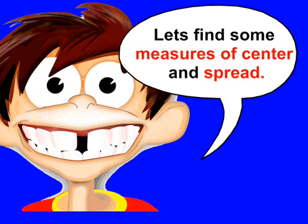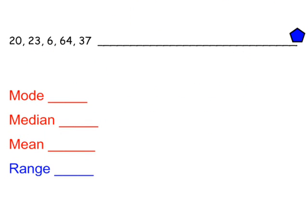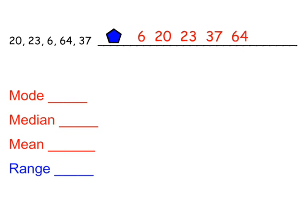Let's dive right in and find some of these measures of center and spread. I've already put these numbers in order — that's the first thing you want to do when you have a data set: place all the numbers in order from least to greatest. That will help you find these different measures. The mode is easy: there is no number that appears more than once, so there's actually no mode in this data set. Be careful — don't put zero, because you'd be saying zero is the most common number, and we don't even have a zero in that data set. You would write 'none' or 'no mode.'